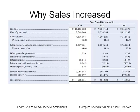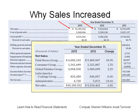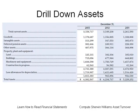In the previous module we examined why sales increased. We see that sales increased from 2012 to 2013, and this is mostly attributable to the paint stores group whose sales increased from 2012 to 2013. Therefore, it was the paint stores group that caused sales to increase by approximately $600,000,000. Next, let's see what caused the assets to increase.